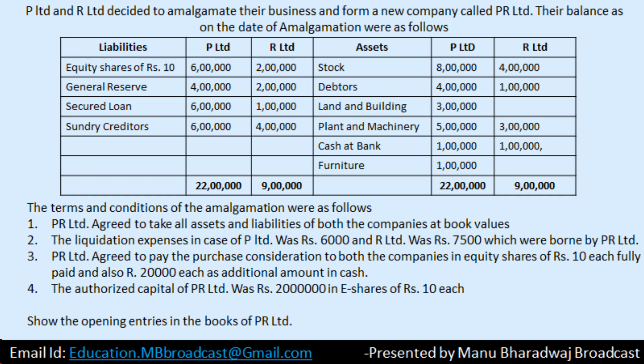PR Limited agreed to pay the purchase consideration to both companies in equity shares of Rs. 10 each, and also Rs. 20 each as additional amount in cash. They are giving additional capital of Rs. 20,000 and the remaining balance of purchase consideration by issue of equity shares of Rs. 10 each. The authorized capital of PR Limited was Rs. 20,00,000 in equity shares of Rs. 10 each. We need to show the opening entries in the books of PR Limited.